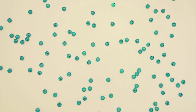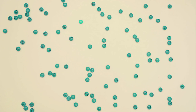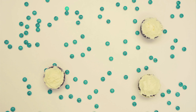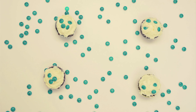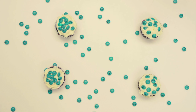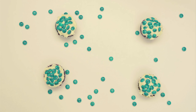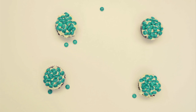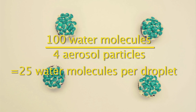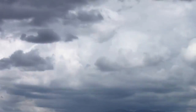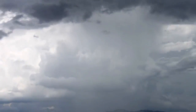But what if we only have a few aerosol particles available? Let's imagine that we still have 100 water molecules in the air, but now we only have four aerosol particles. How many water molecules will end up on each cloud droplet? In this case, there are fewer particles for the water to condense on, and so each droplet contains a lot of water. This results in a few large droplets. Because the cloud droplets are so large, they are heavy and can fall out of the sky as rain, making this a rain cloud.